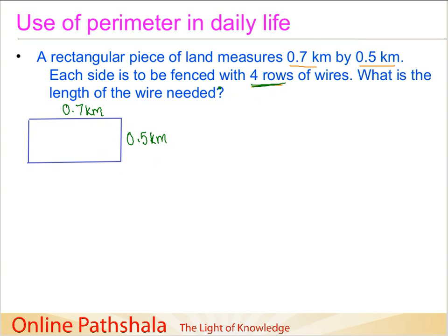What is the length of the wire needed? We know that when we go along this field once, we are going through the perimeter. So first we find the perimeter. The perimeter of this rectangular field is 2 times length plus width. In this case, the length and width are given in kilometers: 0.7 and 0.5.